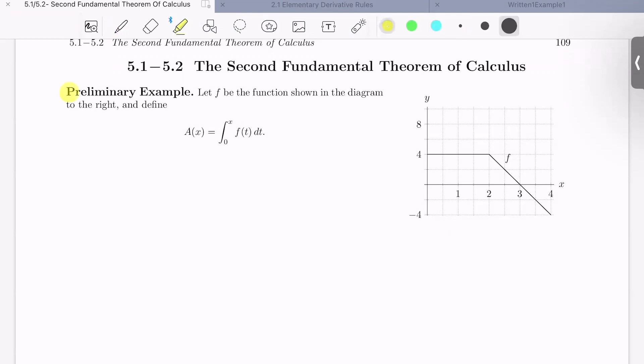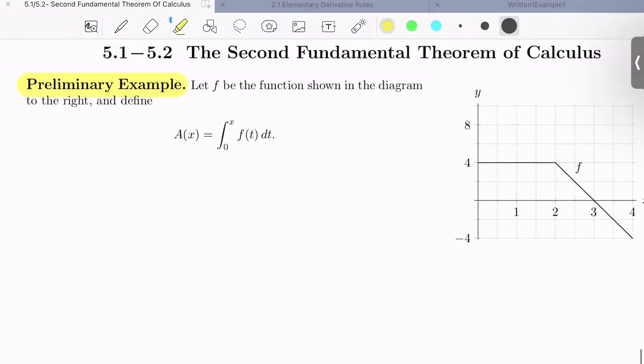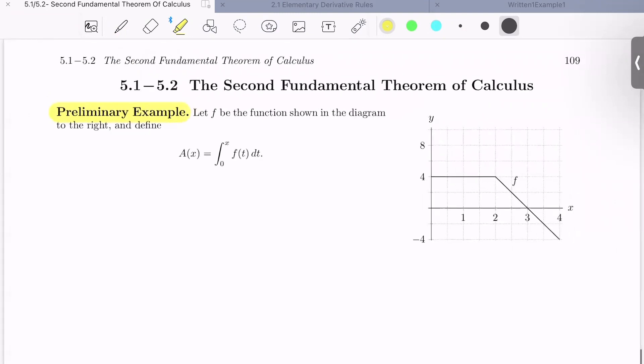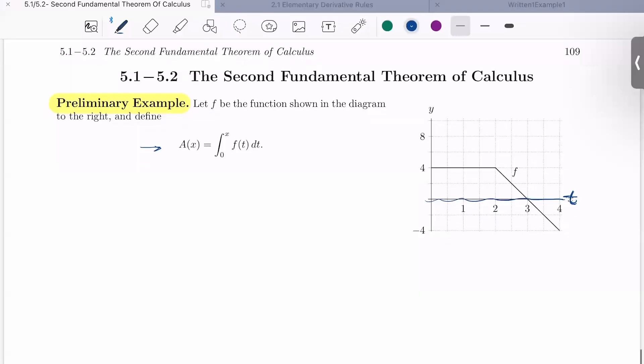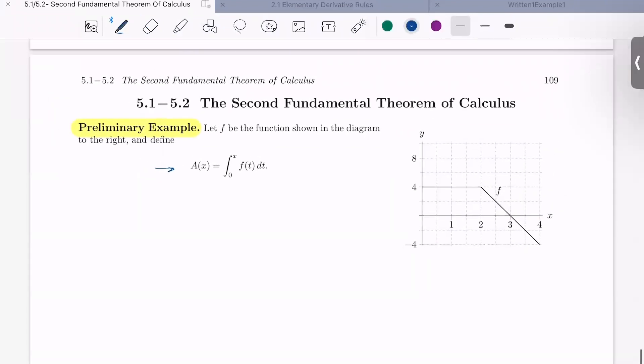In this second part of the fundamental theorem of calculus, we learn another relationship between integrals and antiderivatives. So to get started, let's look at our first preliminary example. In this example, we let f be the function shown in the diagram to the right, and we define a function in kind of an interesting way. Define a of x as the function that's computing the integral from 0 to x of f(t) dt. So here, this horizontal axis is also playing the role of t.